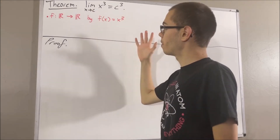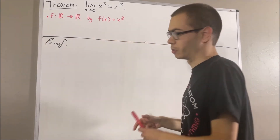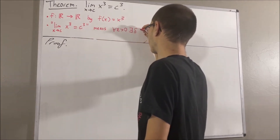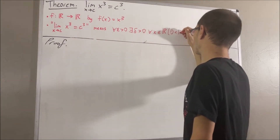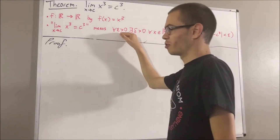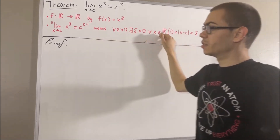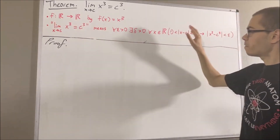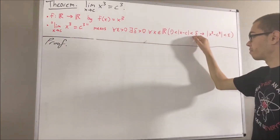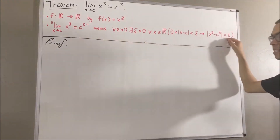What does that mean? Well, by the epsilon-delta definition of the limit of a function, it means the following: for every epsilon greater than zero, there exists a delta greater than zero, such that for all x in the domain of our function, if zero is less than the absolute value of x minus c, which is less than delta, then the absolute value of x cubed minus c cubed is less than epsilon.